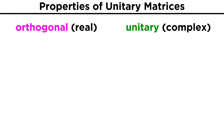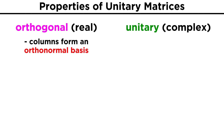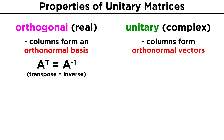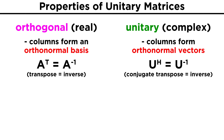Finally, recall two things. First, that real matrices are considered orthogonal if the columns form an orthonormal basis, and second, that the inverse of an orthogonal matrix is the same as its transpose. For complex matrices, if the columns form orthonormal vectors, the matrix is said to be unitary, and the conjugate transpose of the matrix is the same as the inverse of the matrix.